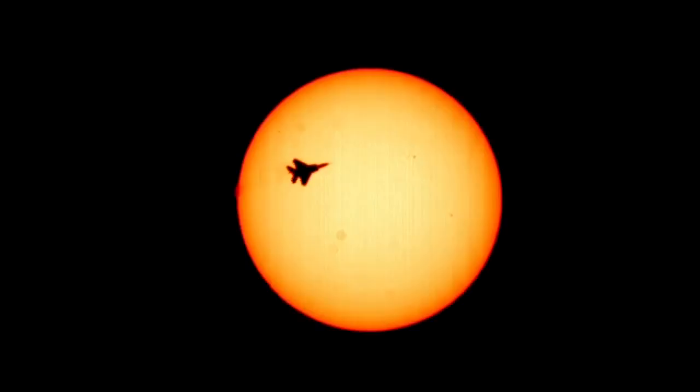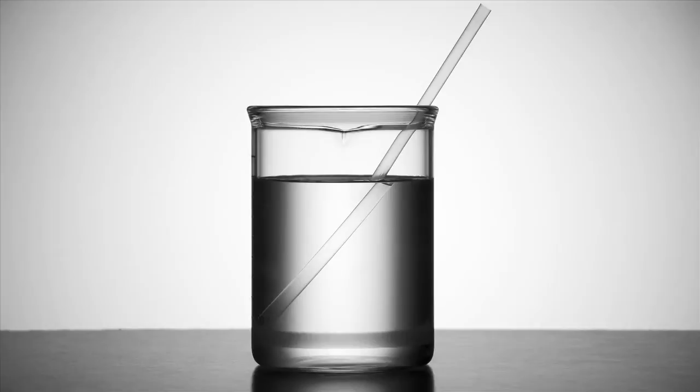When you have a glass of water with a straw in the water, you'll see the straw appear to be at one position below the water and a slightly offset position above the water. That's because of the density change. The same thing happens with the shock waves.